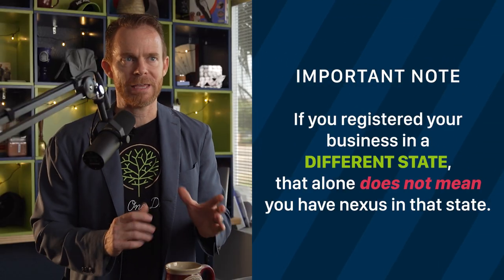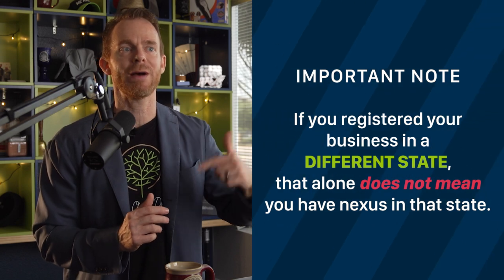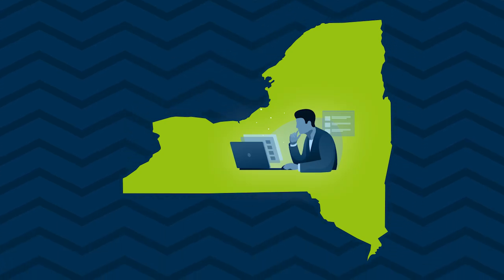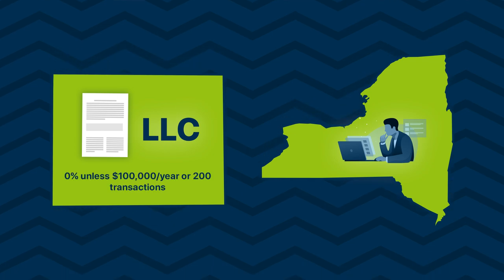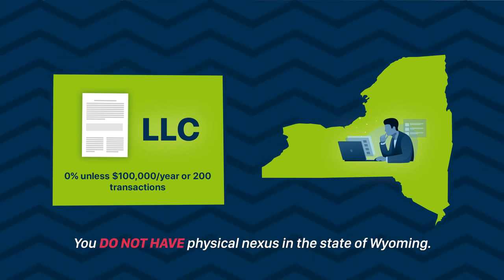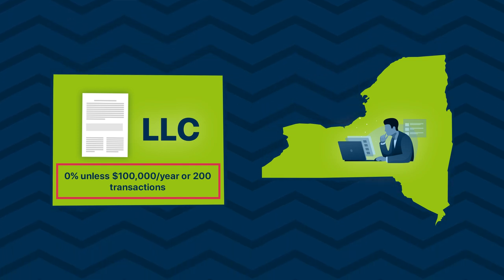Important note: if you registered your business in a different state, that alone does not mean you have nexus in that state. For example, let's say you live in New York, where you run your Amazon business from your laptop, but your LLC was registered in Wyoming because they have 0% corporate and income tax. You do not have physical nexus in the state of Wyoming. In other words, you only have to collect sales tax for Wyoming if you reach the economic nexus sales threshold for that state, which is $100,000 per year and/or 200 transactions.